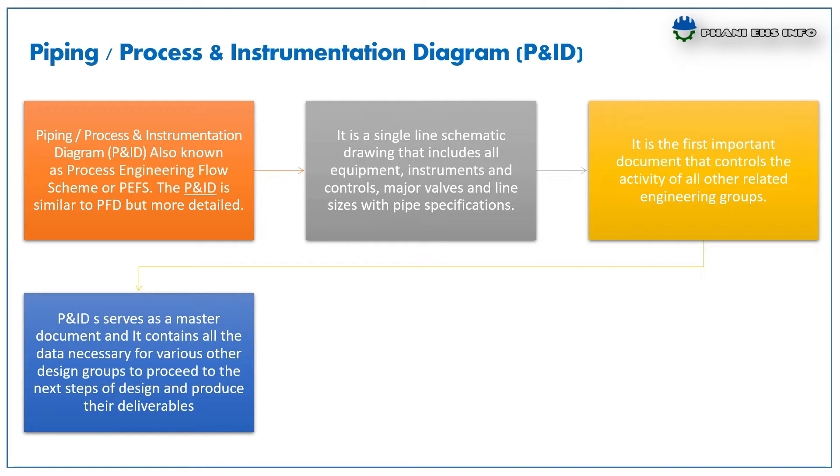P&ID serves as a master document and it contains all the data necessary of various other designing groups to proceed to the next steps of the design and produce their deliverables.